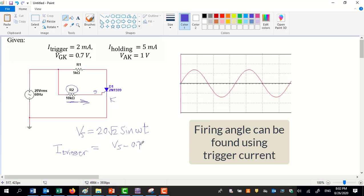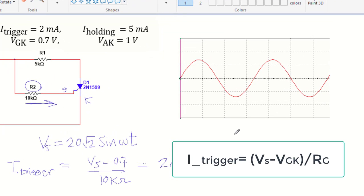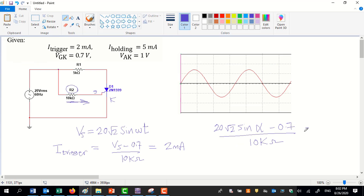To find alpha, we use trigger current and trigger circuit. Trigger current passes the gate can be written as V source minus the drop voltage across gate cathode divided by gate resistance. We solve this equation, firing angle 47 degrees.